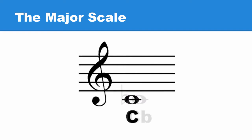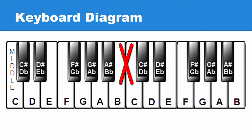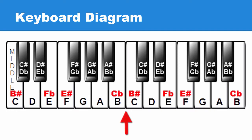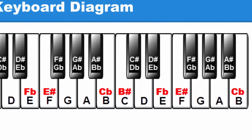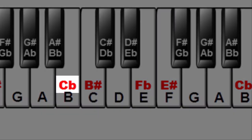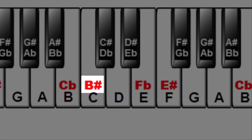But what if we want to add a flat to C? While there is no black key between C and B, there are enharmonic note names for the white keys that have no black keys between them. These give us the note names C flat, F flat, B sharp, and E sharp.